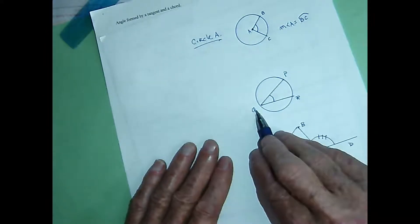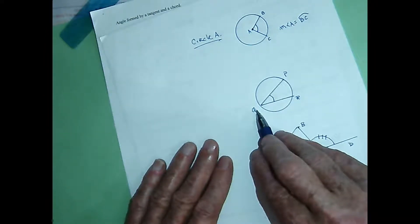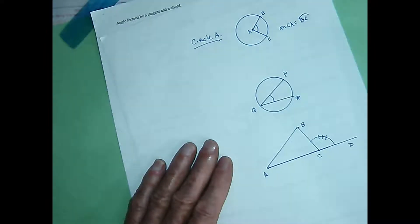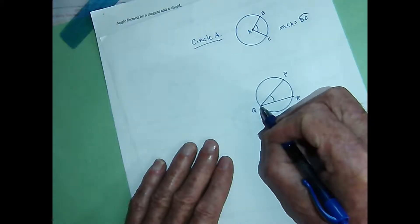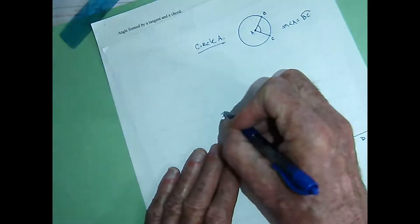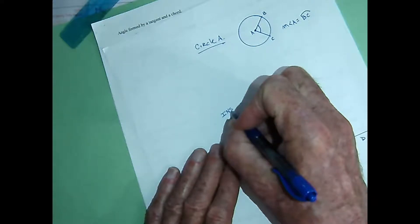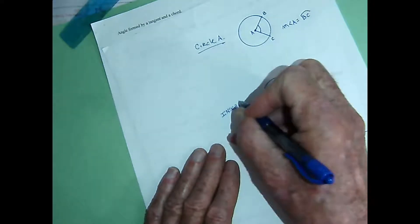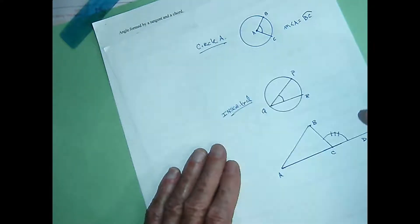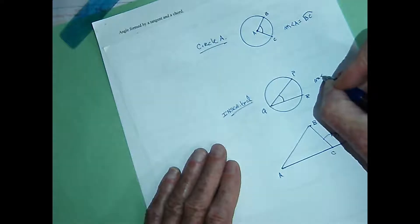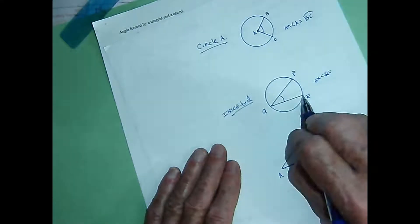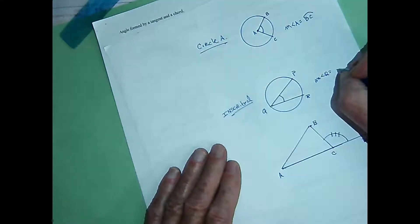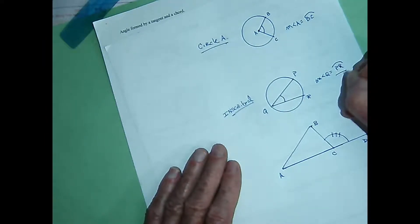What about angle Q? Anything special about it? Well, it does have its vertex on the circle. That makes it an inscribed angle. How do you measure it? The measure of angle Q is one half the arc it cuts — it cuts arc PR, so it would be arc PR divided by 2.